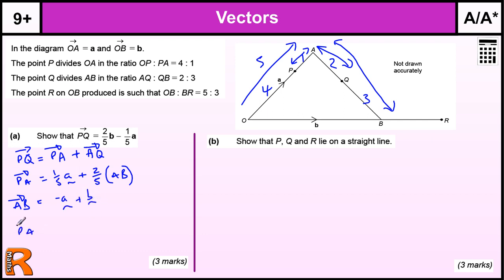So PA, back to that we've got 1 fifth A plus 2 fifths of A to B which is minus A plus B. So we've got 1 fifth A plus 2 fifths of minus A. So we're actually taking away 2 fifths from 1 fifth to leave us with minus 1 fifth. And then we've got plus 2 fifths B. And then we just need to rearrange that to get what we're trying to show. So 2 fifths B minus 1 fifth A. And there we go. There's the answer.